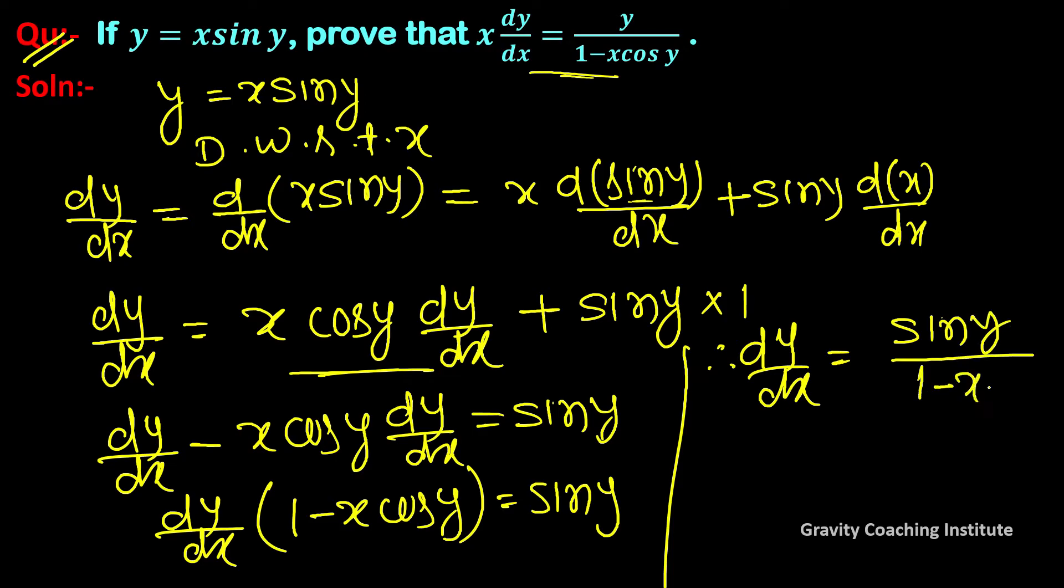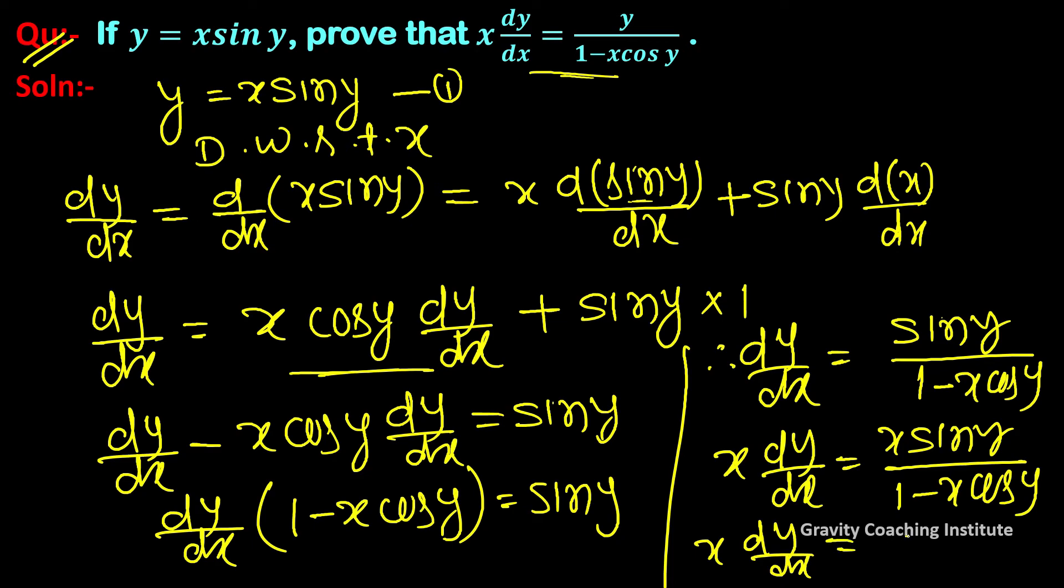Multiplying both sides by x: x dy/dx = x sin y/(1 - x cos y). Substituting from equation 1 where y = x sin y: x dy/dx = y/(1 - x cos y). Hence proved.